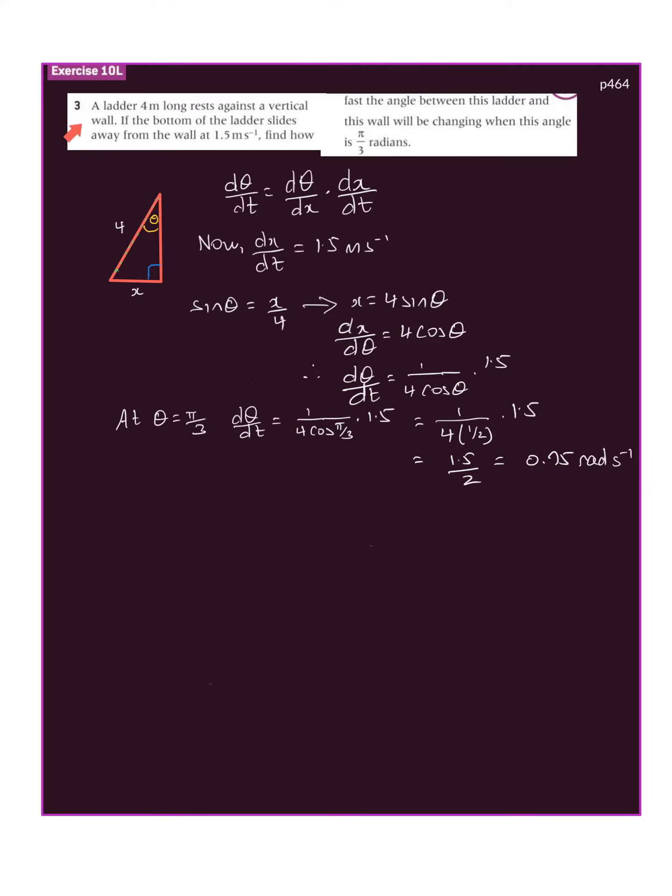Let's have a look at question 3, it's 10L, page 464. A ladder 4 meters long rests against a vertical wall. If the bottom of the ladder slides away from the wall at 1.5 meters per second, find how fast the angle between the ladder and the wall will be changing when this angle is π/3 radians.